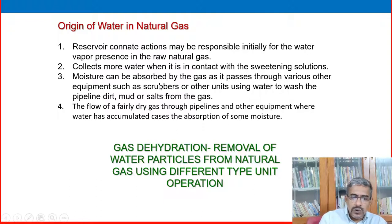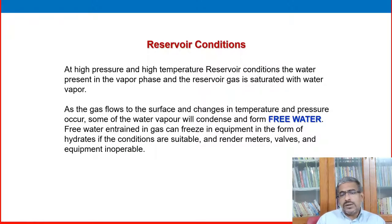Natural gas can collect more water when it is in contact with a sweetening solution. Moisture can be absorbed in the gas as it passes through various other equipment such as scrubbers or other units. Using water to wash pipeline dirt, mud, and salt in the gas. The flow of a fairly dry gas through pipeline or equipment where water has accumulated causes absorption of some moisture. These are ways where natural gas can collect, absorb, or dissolve some quantities of water other than reservoir conditions. Gas dehydration is removal of water particles from natural gas using different unit operations.